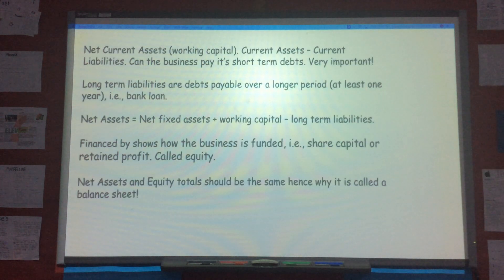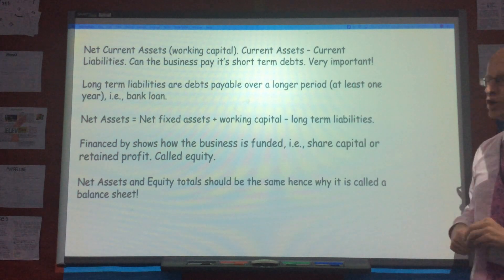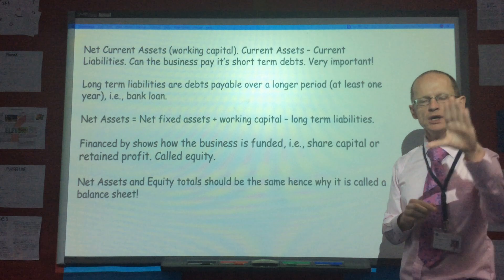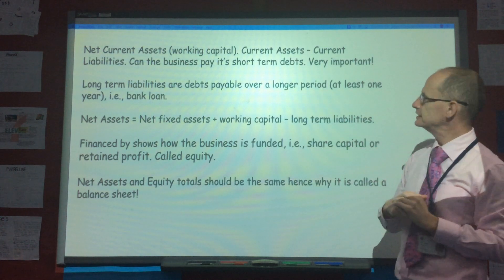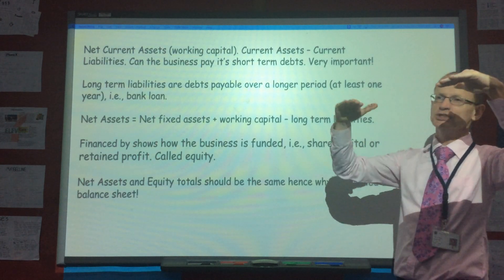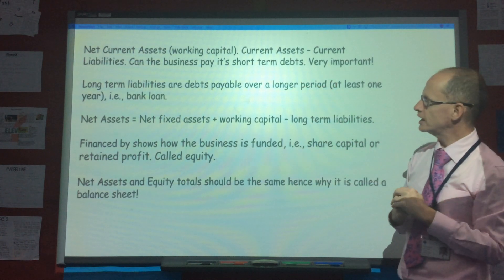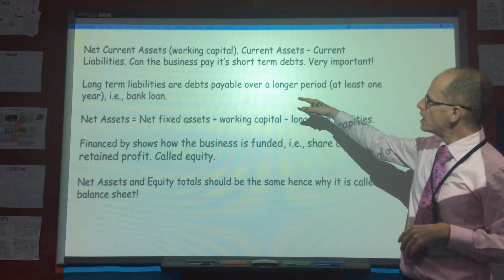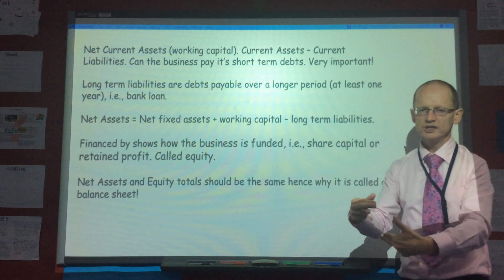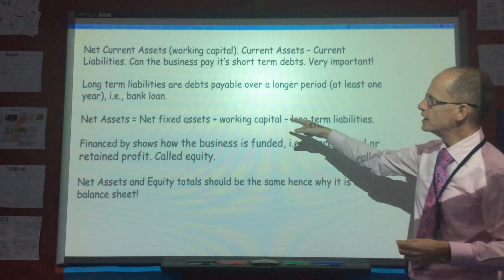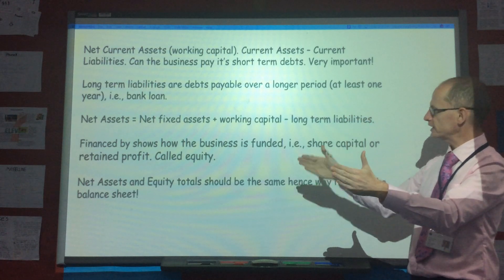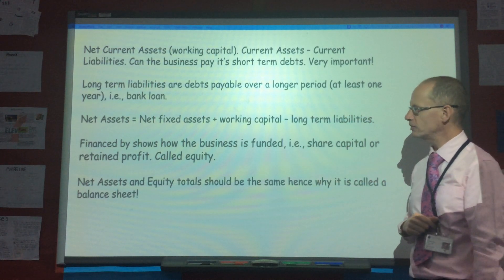Net current assets, sometimes called working capital, are very important. It's current assets minus current liabilities, and it measures whether you can pay your short-term debts. Current assets should therefore be larger than current liabilities. Long-term liabilities are debts payable for more than one year, such as bank loans. The net assets calculation is net fixed assets plus working capital minus long-term liabilities.